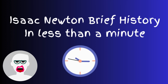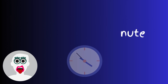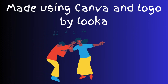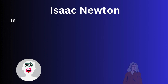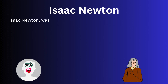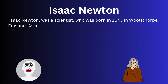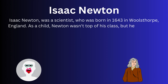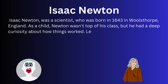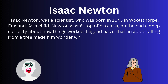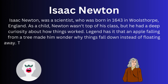Isaac Newton: a brief history in less than a minute. Isaac Newton was a scientist who was born in 1643 in Woolsthorpe, England. As a child, Newton was at the top of his class, but he had a deep curiosity about how things work. Legend has it that an apple falling from a tree made him wonder why things fall down and not float away.